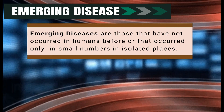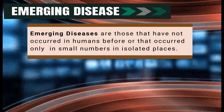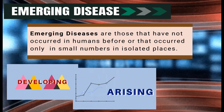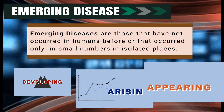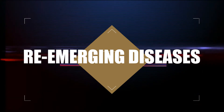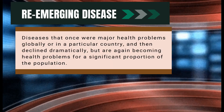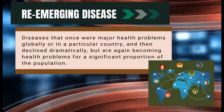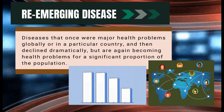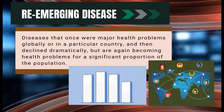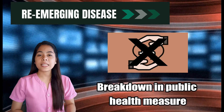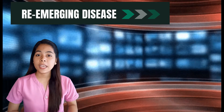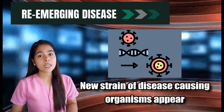Emerging diseases are those that have not occurred in humans before, or that occurred only in small numbers in isolated places. It means developing, arising, and appearing. Re-emerging diseases are those diseases that once were major health problems globally or in a particular country, and then declined dramatically, but are again becoming health problems for a significant proportion of the population. Re-emergence may happen because of a breakdown in public health measures for diseases that were once under control, or when a new strain of disease-causing organisms appear.